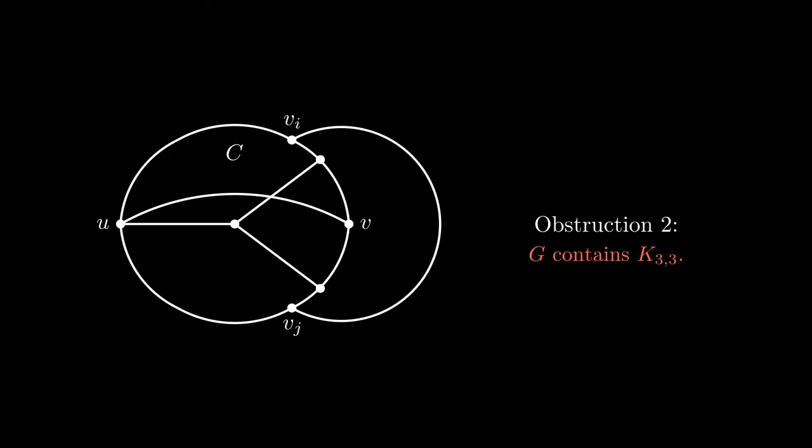The second looks like this. By the same method as before, we can see that G also contains K3,3 as a subdivision of one of its subgraphs. The third looks like this. This structure again gives a subdivision of K3,3.